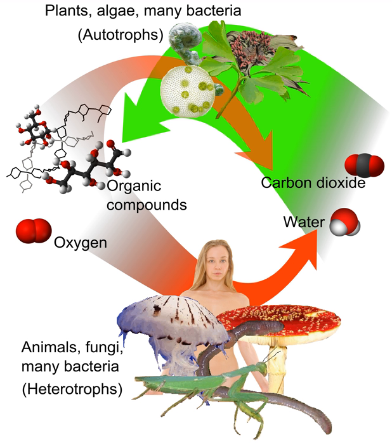Heterotrophs may be subdivided according to their energy source. If the heterotroph uses chemical energy, it is a chemoheterotroph, e.g., humans and mushrooms. If it uses light for energy, then it is a photoheterotroph, e.g., green non-sulfur bacteria.